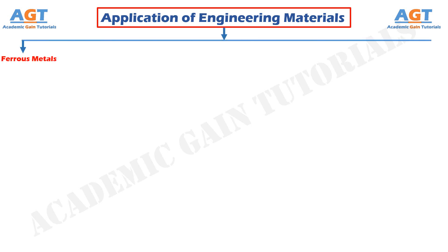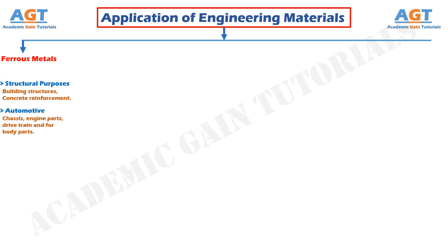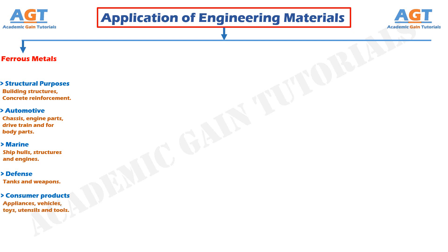Ferrous metals are widely used in structural purposes for building structures and concrete reinforcement. In automotive, for chassis, engine parts, drivetrain, and body parts. In marine, for construction of ship hulls, structures, and engines. In defense, for construction of tanks and weapons. And in consumer products, for making appliances, vehicles, toys, utensils, and tools.